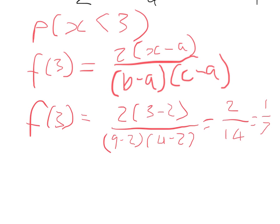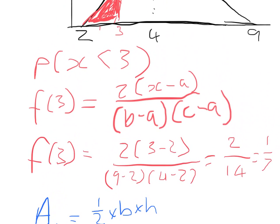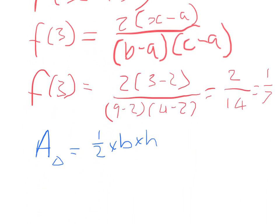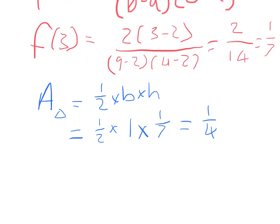We've found our height is 1/7. Now thinking back to basic geometry, the formula for the area of a triangle is half base times height. Our base here is the distance from 2 to 3, which is 1. So the area equals 1/2 × 1 × 1/7 = 1/14. Since the area under the distribution function equals the probability, P(X < 3) = 1/14.